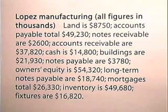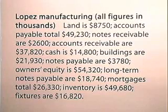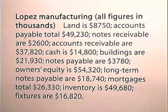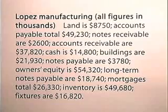Notes payable are $3,780. Owner's equity is $54,320. Long term notes payable are $18,740. Mortgages total $26,330. Inventory is $49,680. And the fixtures are $16,820.